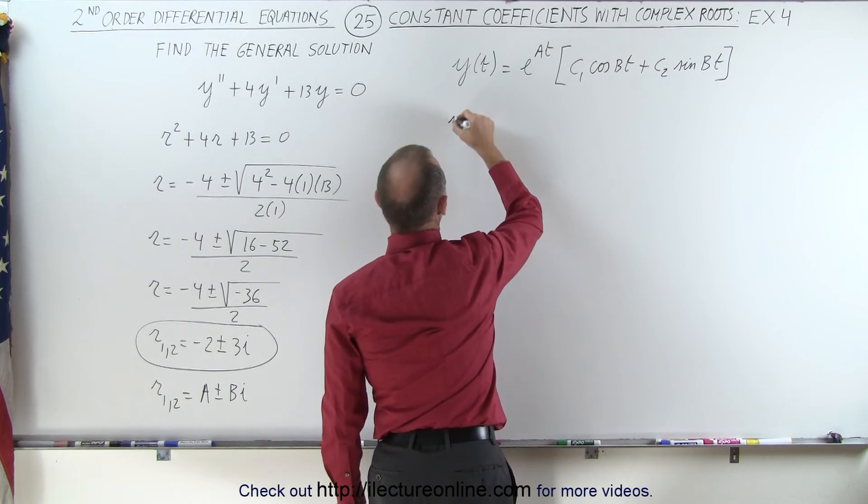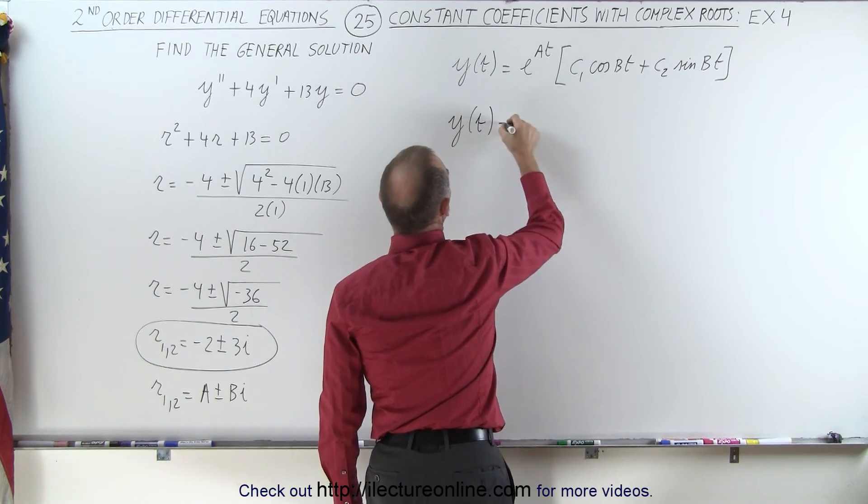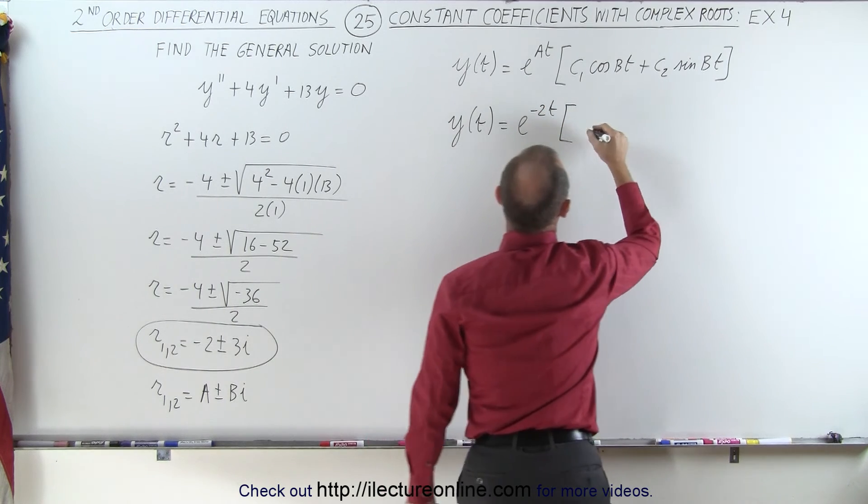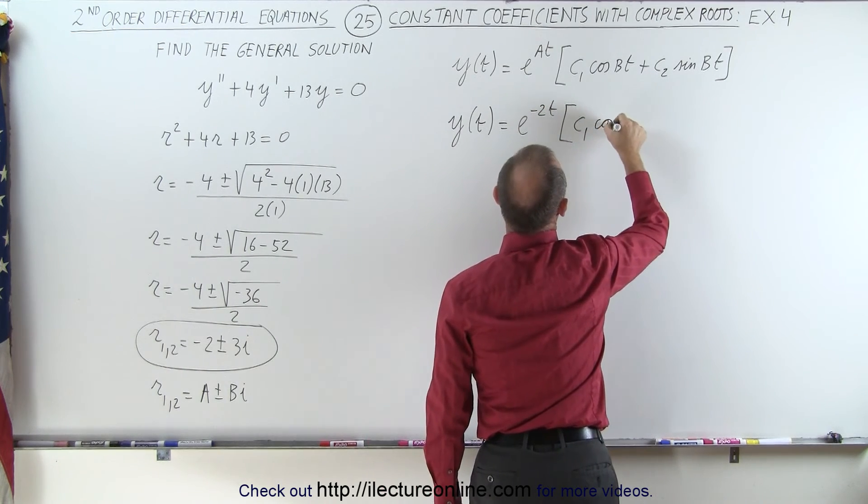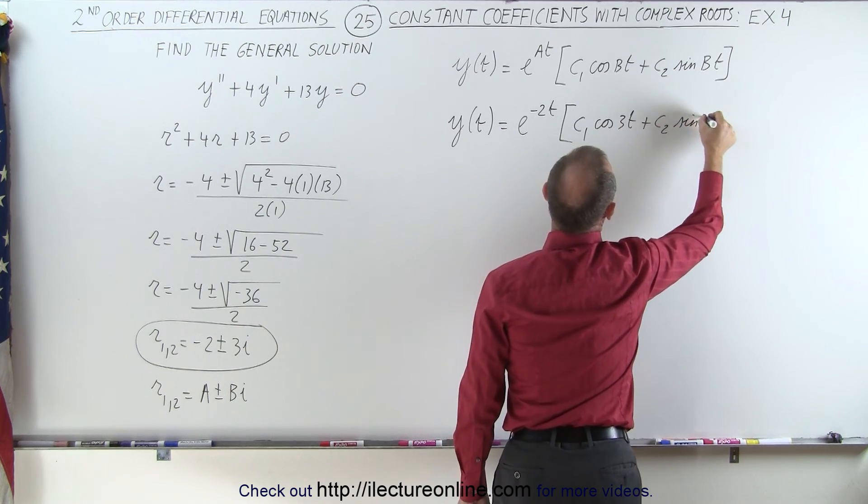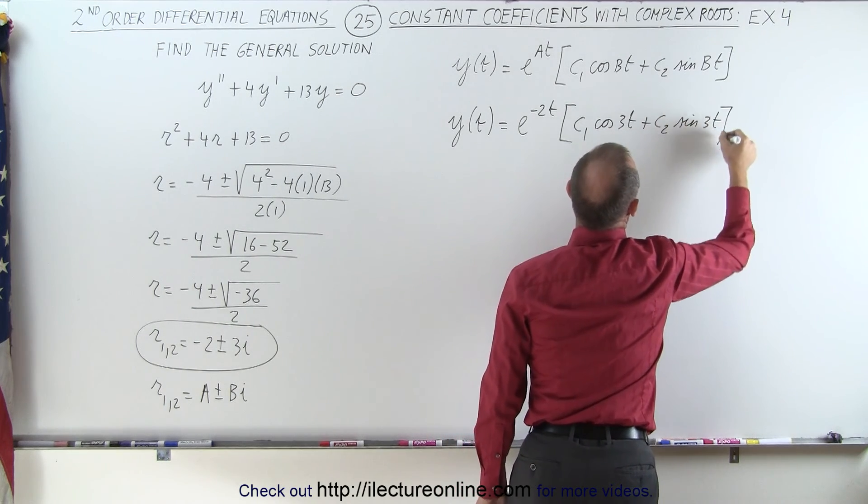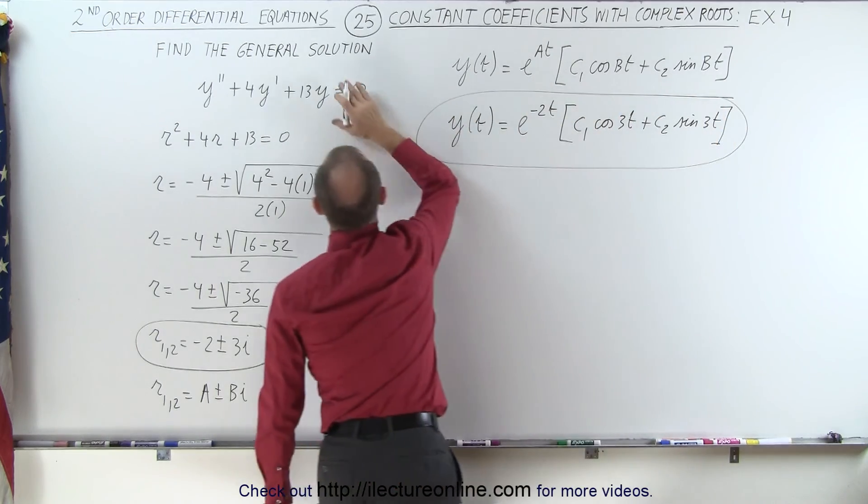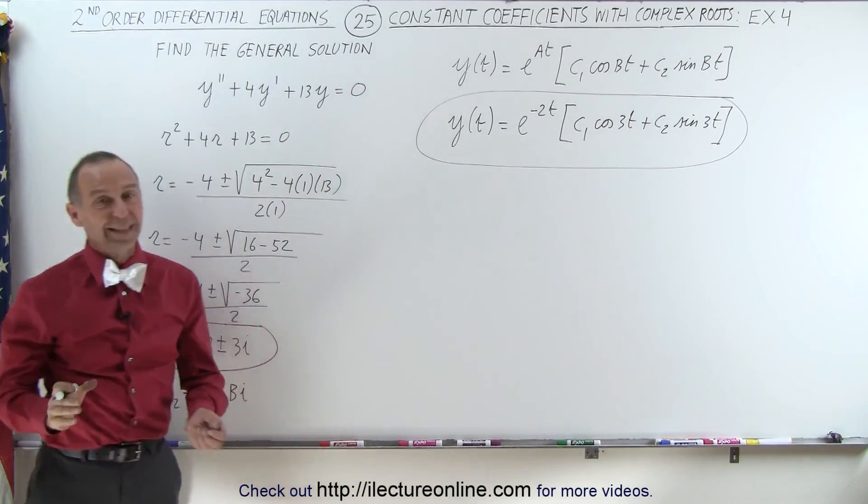Therefore, the general solution y of t is equal to e to the minus 2t times c1 cosine of 3t plus c2 sine of 3t. And that's the general solution to this homogeneous differential equation, and that's how it's done.